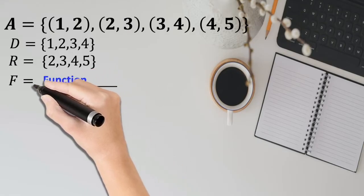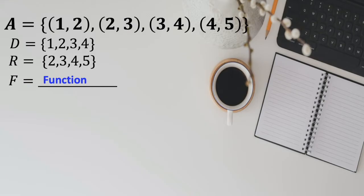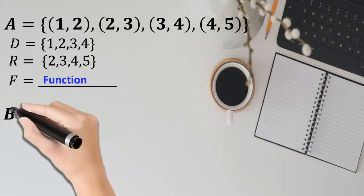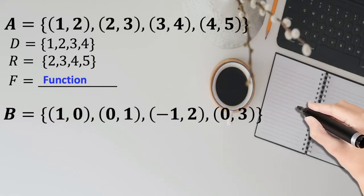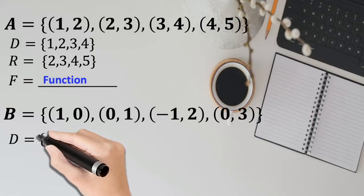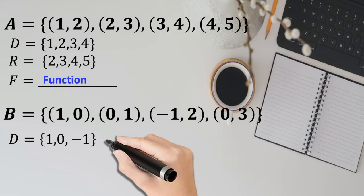With this one, we can identify this as a function because the domain corresponds to one and only one element in the range. Let's take an example for another set of ordered pairs. Here we have (1,0), (0,1), (-1,2), and (0,3).